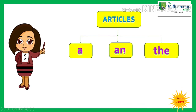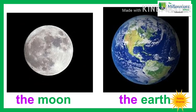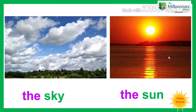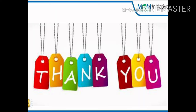There is one more article, which is THE. We use the article THE for nouns which are known to us. For example, the moon, the earth. Similarly, the sky, the sun.